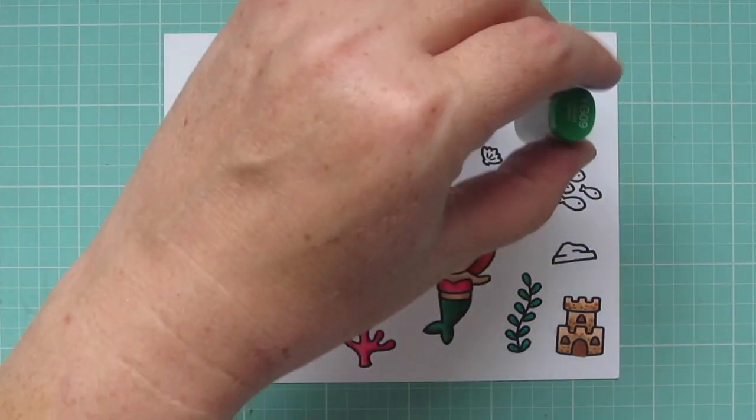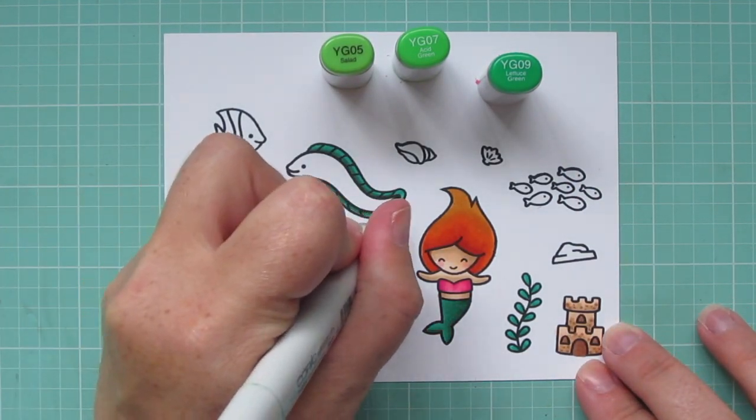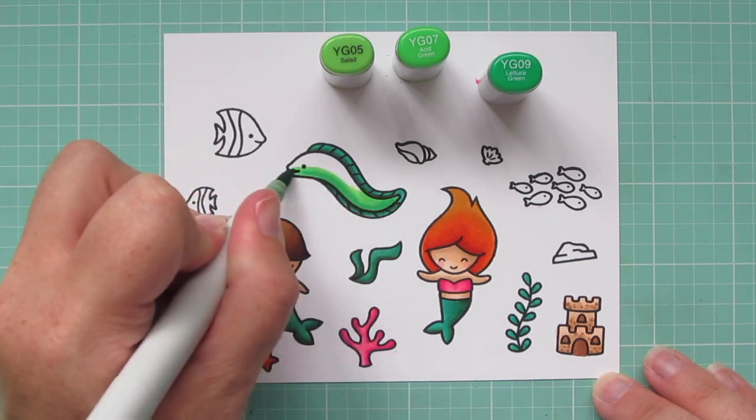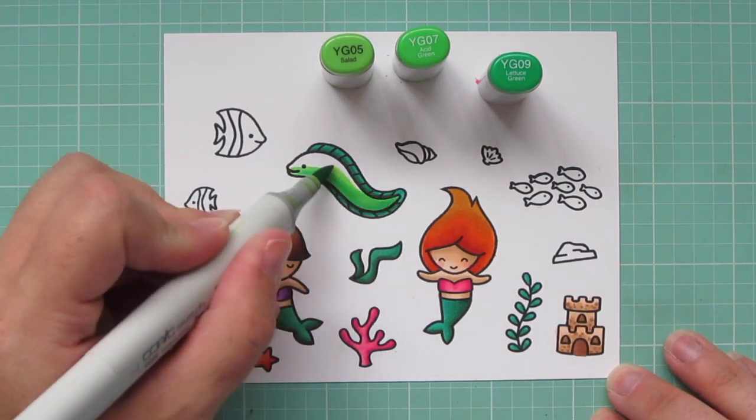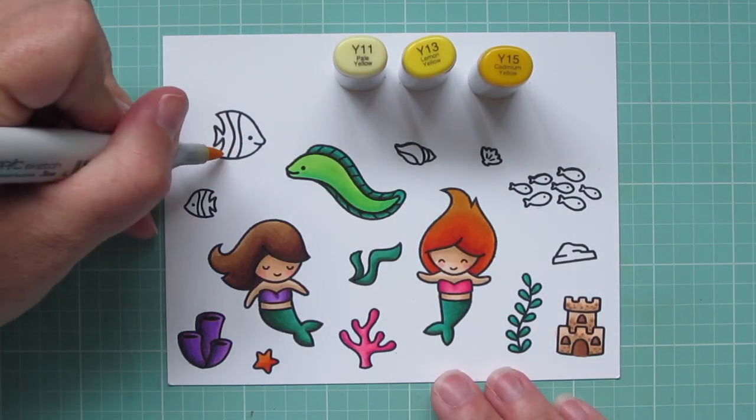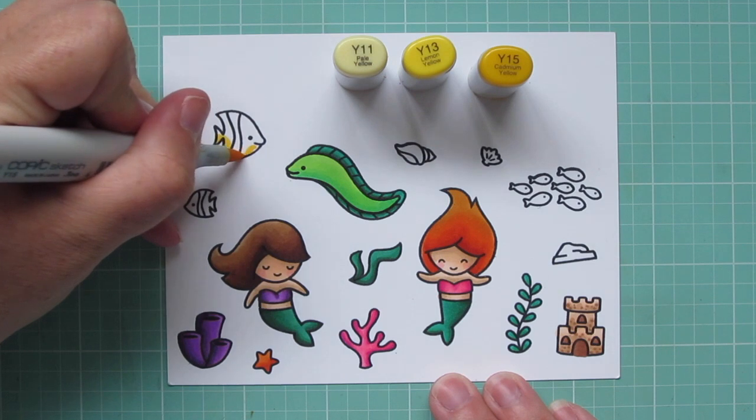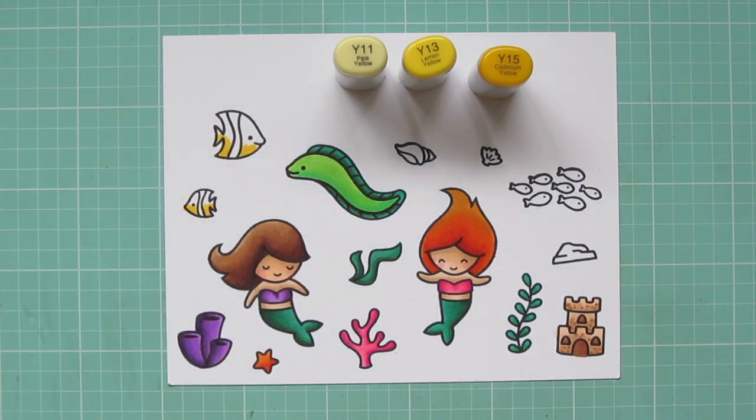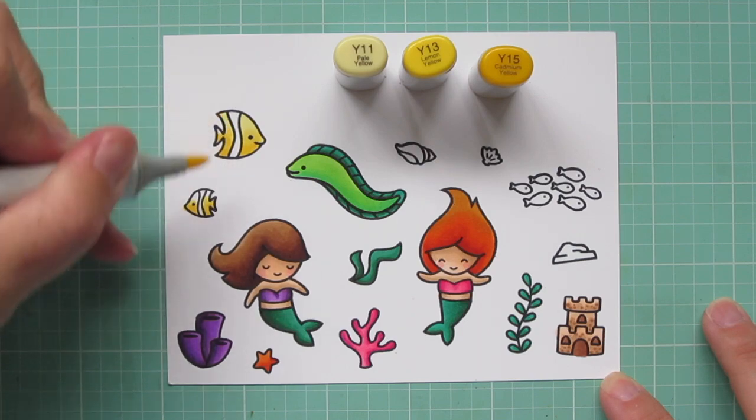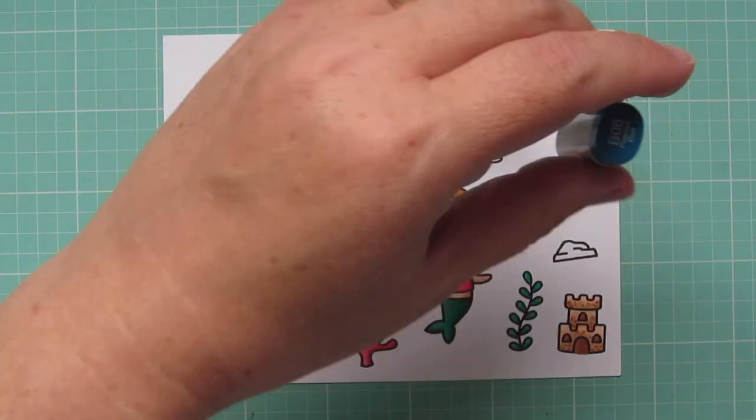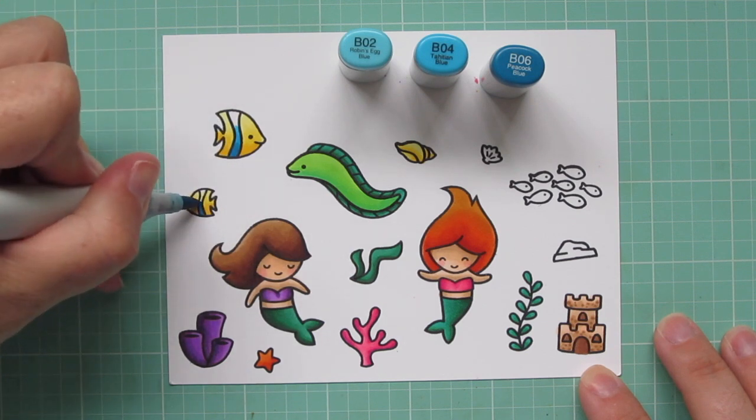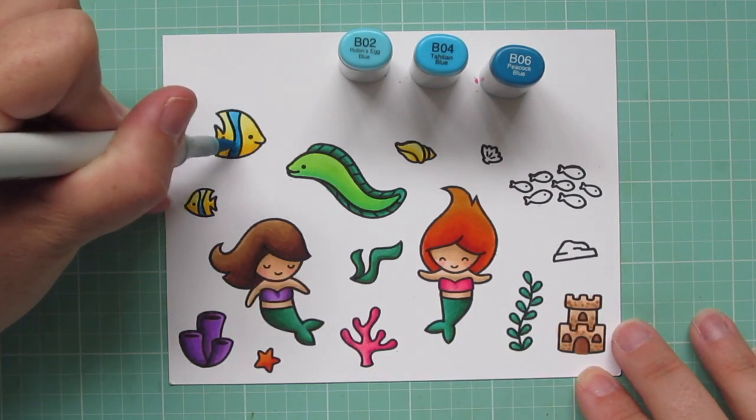For the eel's body, I'm using YG05, YG07, and YG09. I'm going to put the dark shadow on the underneath of his body, and then blend up with the YG07, and then fill in the top with the YG05. Since these are under the sea, I'm just imagining that my light source is coming down from above. Of course, if it was really far down, there wouldn't be much light. But I guess where I'm having my scene set, it's not that far down under the sea. I'm using Y11, Y13, and Y15 for the two angelfish. And then B02, B04, and B06 for the stripes in the center. And I'm also going to color in the little school of fish over on the right hand side with those same shades.